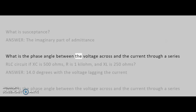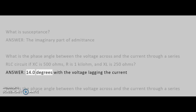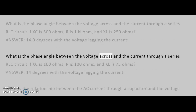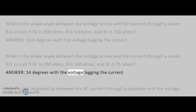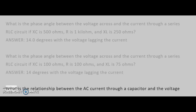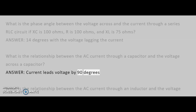What is the phase angle between the voltage across and the current through a series RLC circuit if XC is 500 ohms, R is 1 kilohm, and XL is 250 ohms? Answer: 14.0 degrees, with the voltage lagging the current. What is the relationship between the AC current through a capacitor and the voltage across a capacitor? Answer: Current leads voltage by 90 degrees.